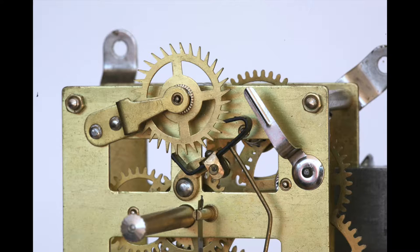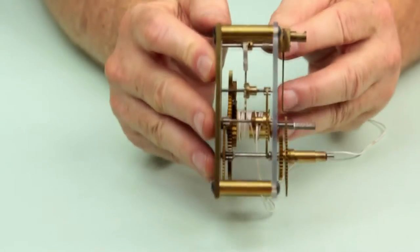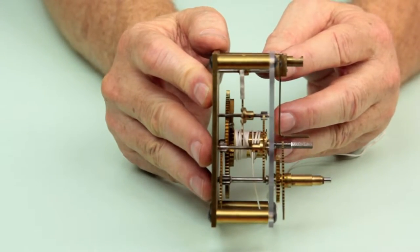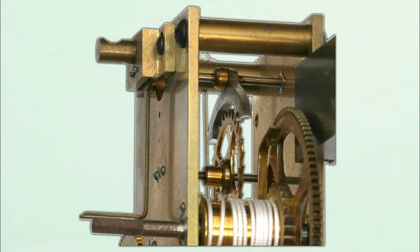Here is a time-only banjo clock movement. In this movement, the pallet cock, anchor retaining clip, and escape cock are not needed as the anchor and escape wheel are now mounted on arbors held between the plates.